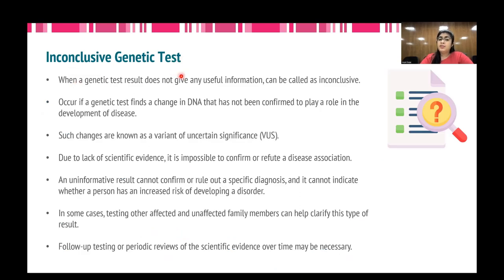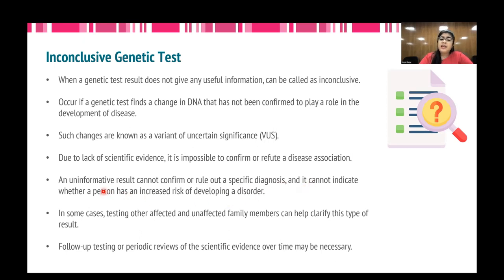There is a third category of genetic test results known as the inconclusive genetic test. It occurs when a genetic test finds a change in DNA that has not been confirmed to play a role in the development of disease — we call these changes variants of uncertain significance. Due to lack of scientific evidence, it is not possible to confirm or refute a disease association, and an uninformative result cannot confirm or rule out a specific diagnosis or determine increased or decreased risk. In some cases, testing other affected and unaffected family members can help clarify this kind of result. Most importantly, follow-up testing or periodic reviews of scientific evidence are very necessary to reclassify these uncertain variants into either the benign or the pathogenic category.